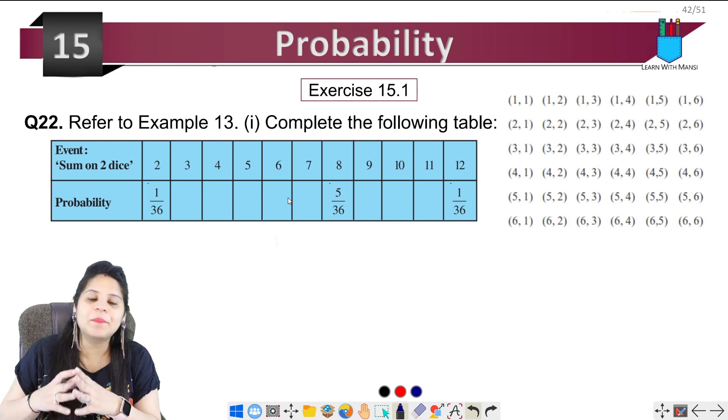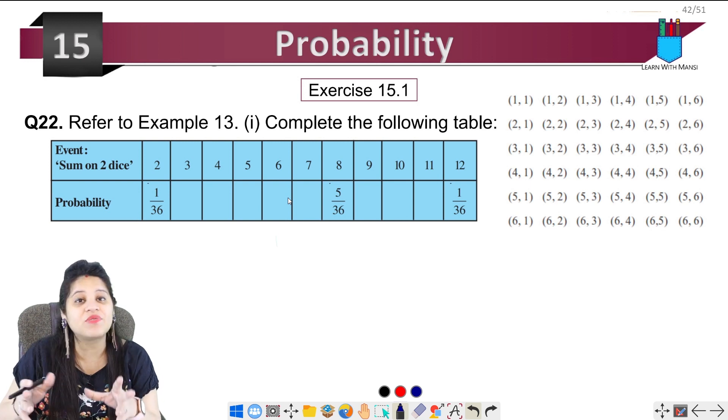Basically here is that when you have two dice thrown, when we have two dice thrown, then there are different possibilities.